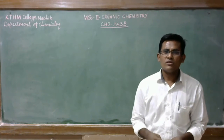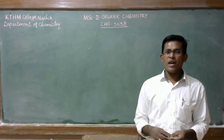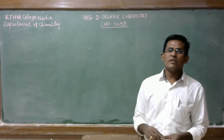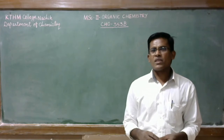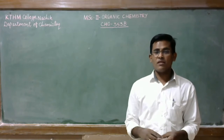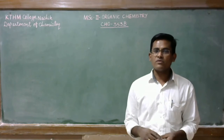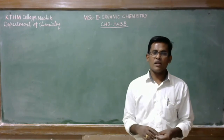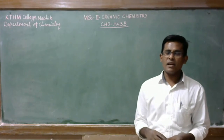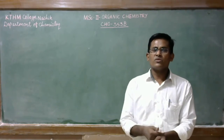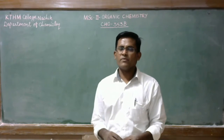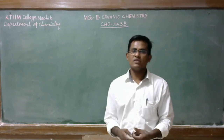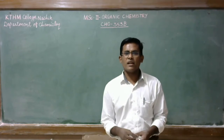Let us move to the topic of malonate chemistry. We know that malonate chemistry is a useful way of controlling the enolization of various carbonyl compounds. We can use ethyl acetoacetate and malonate ester. In this malonate chemistry, we can do alkylation followed by decarboxylation of acetoacetate and malonate ester.